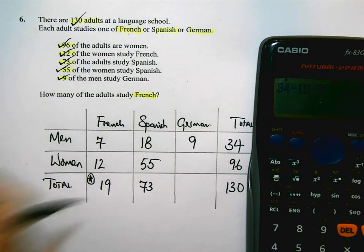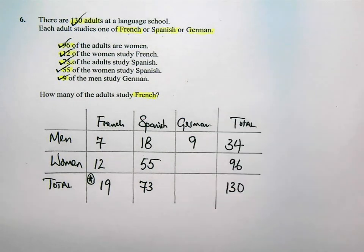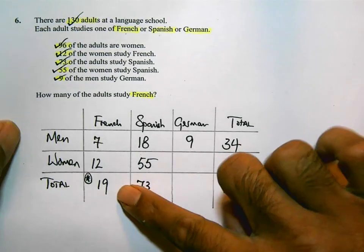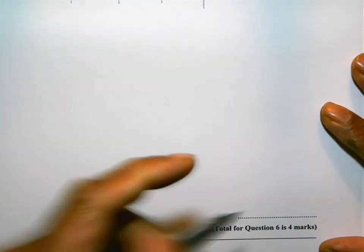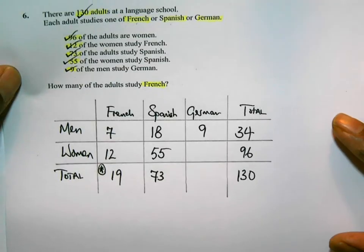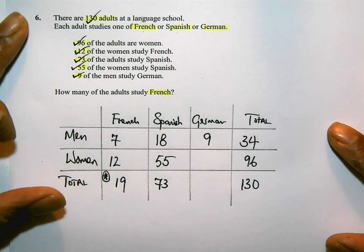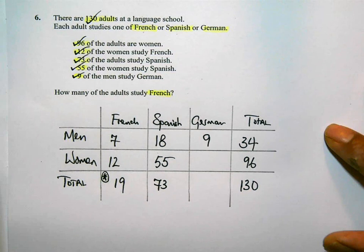I don't need to proceed to the others, and I'm intentionally not going to do that — just to show you that you need to save time. Leave those cells empty. The question said how many adults study French? We've just worked out that it's 19, and that's what I'm going to write in my answer space: 19. That's the number of adults who study French. Have a look at the question again, make sure you could do this, make sure you understand exactly what is needed, and you can get full marks.